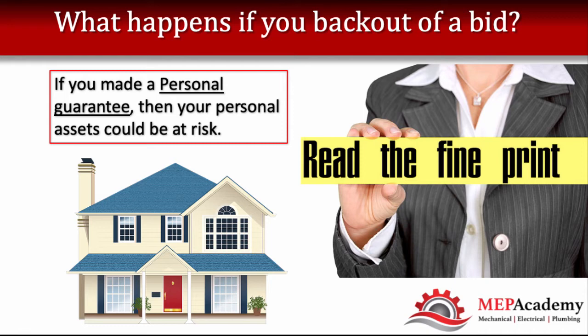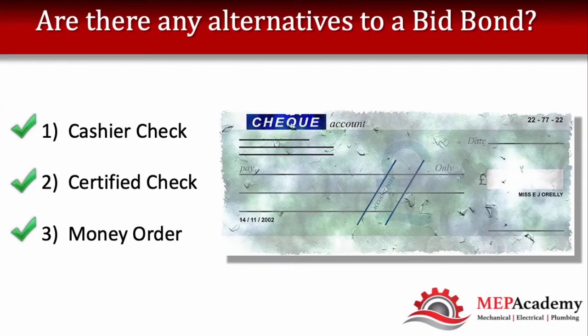There will often be alternatives to a bid bond, such as submitting a cashier's check, certified check, or money order, or some other asset that can make good on your promise to execute the contract if you're the low bidder. Other assets that might be considered are liquid assets — that is, something that can be converted into cash easily.